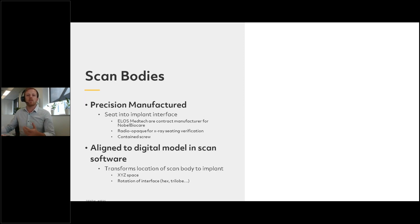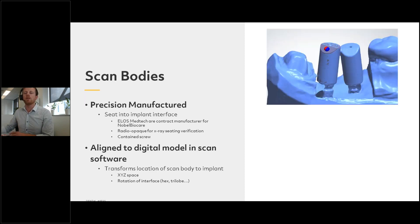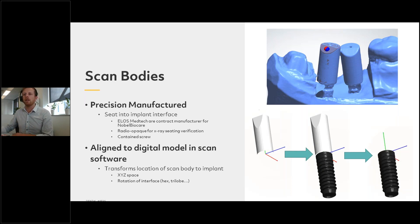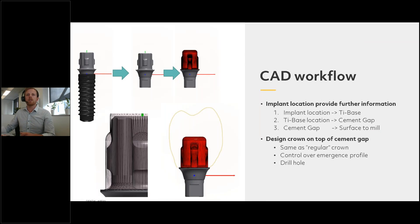So how do we use them? Once we've scanned them, we align the physical scan with our digital model of the same scan body — you can see the purple scan body digital file aligns with the blue scan very well. Once we know the location of the scan body in XYZ space, this tells us where the scan body is relative to the implant — not just XYZ space but rotations as well. Then once we know the implant location in XYZ space, we can design the restoration on top. This tells us where the tie base is.